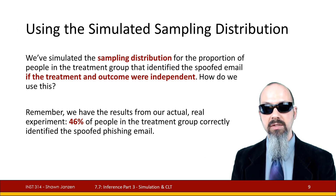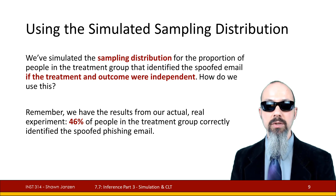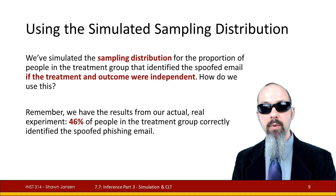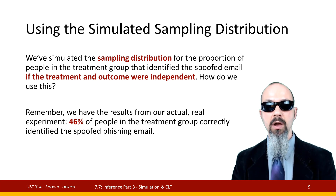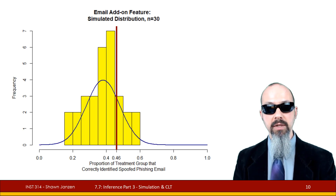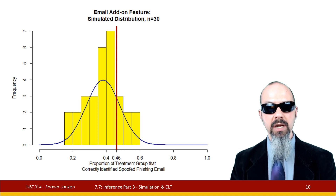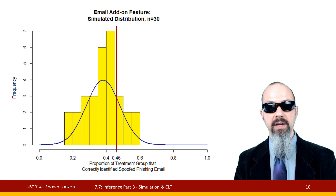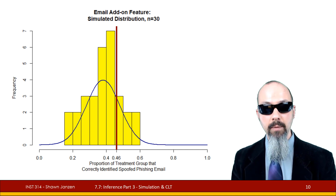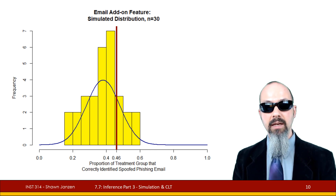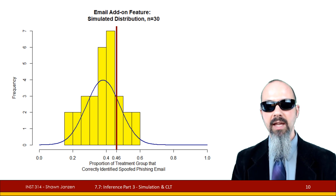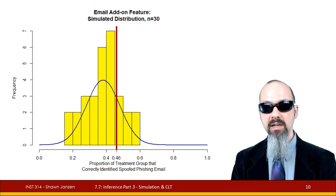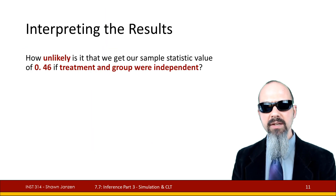Using the simulated sample distribution data, we can see if the identification between treatment and outcome groups are independent. We have data from the actual experiment: 46% of the treatment group correctly identified the spoofed phishing email. We can first do this visually — plotting the histogram and overlaying a line at 0.46. We can see it's generally hugging towards the middle. Values out in the tails are less likely to occur, while values closer to the center are more likely under the null distribution, assuming the null is true. Visually, it might already be likely that the treatment and control are independent.